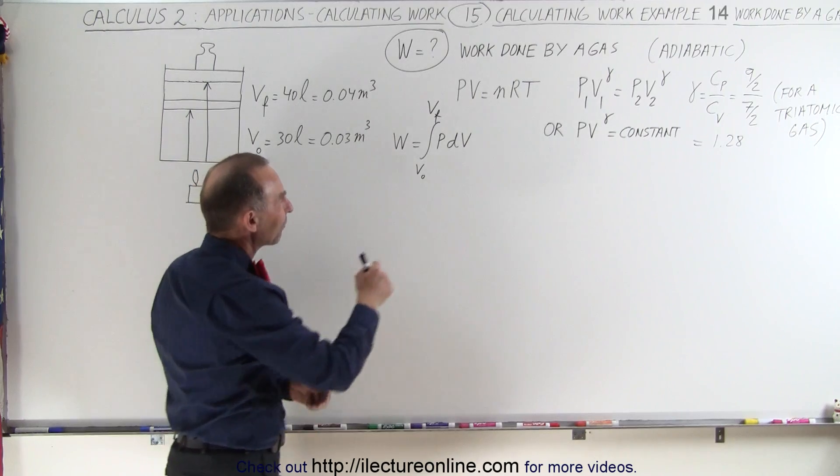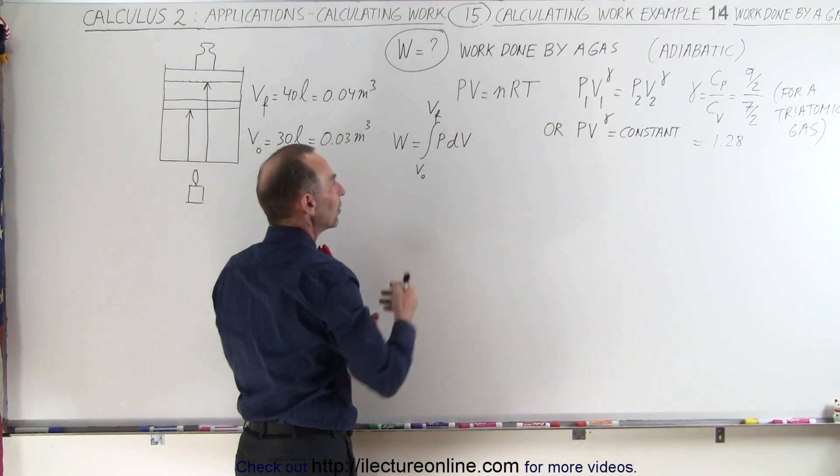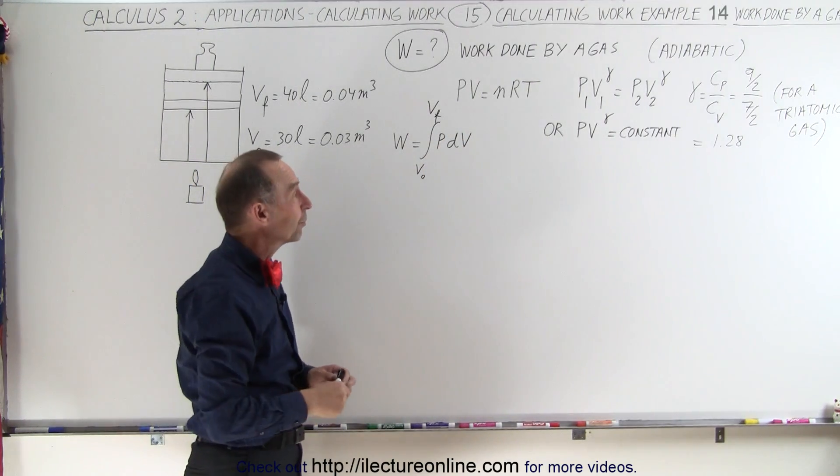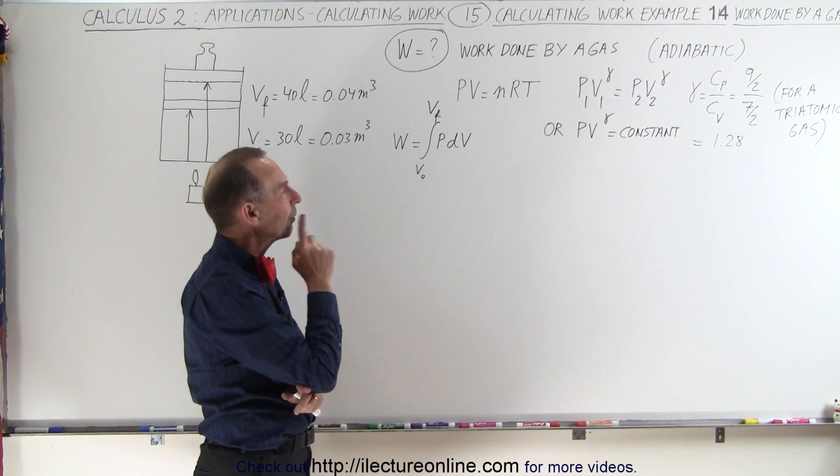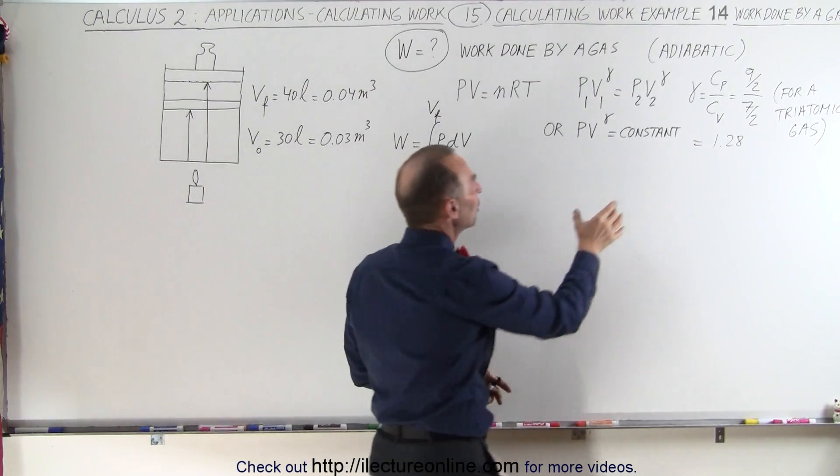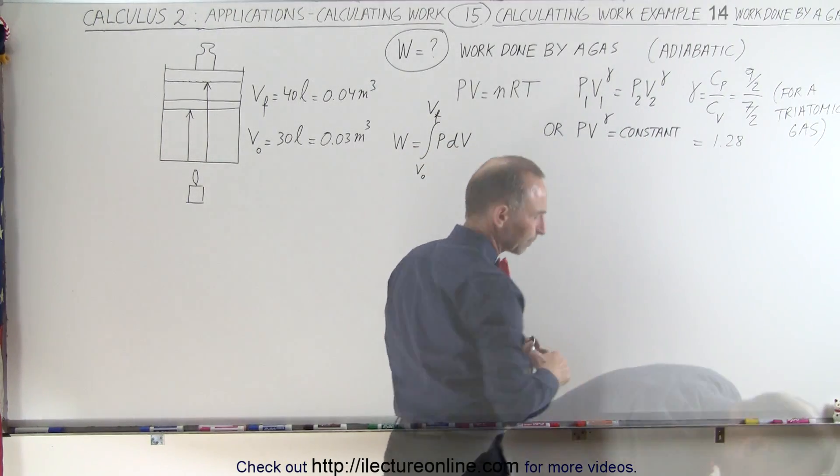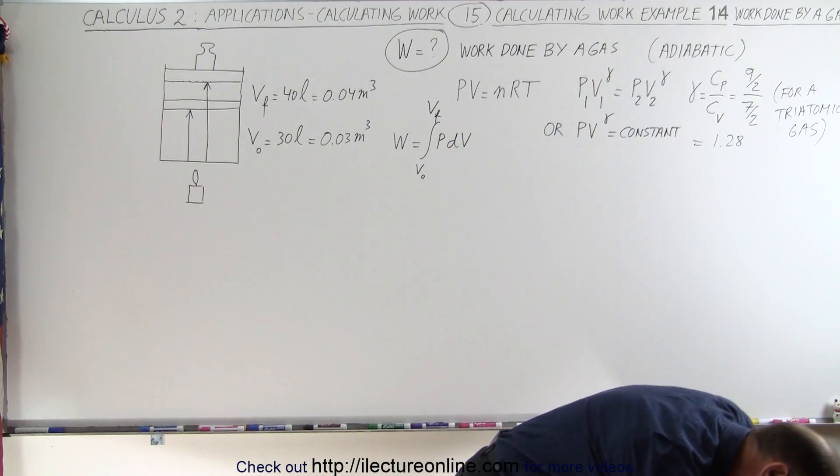The problem is if we have p and dv in the same integral, that is a problem. We have to replace p times v, and what we need to know is what this constant is. Of course I forgot to write that down.